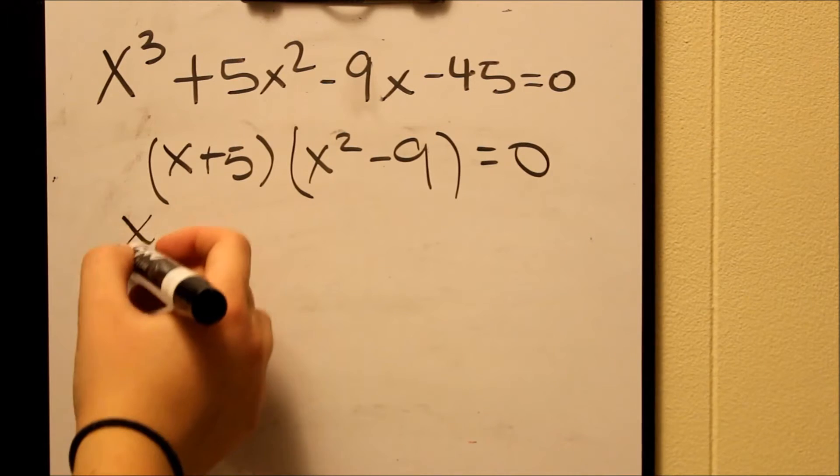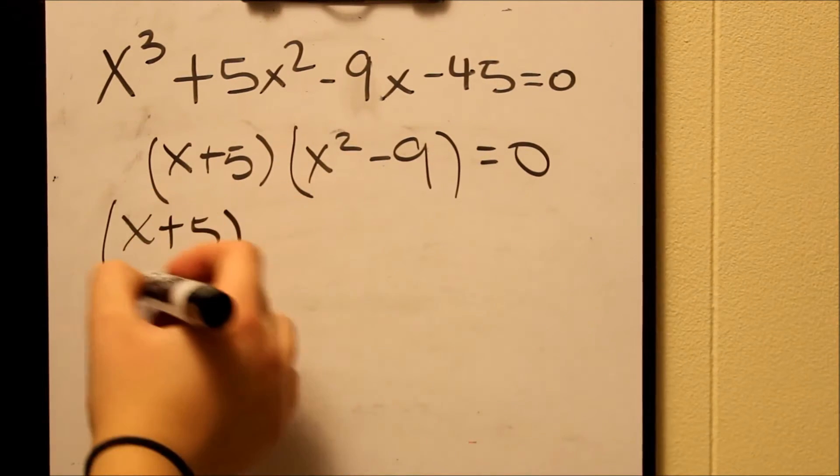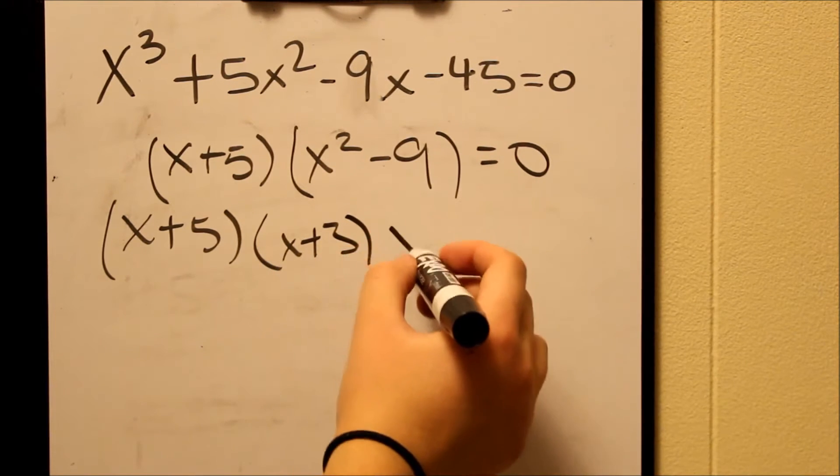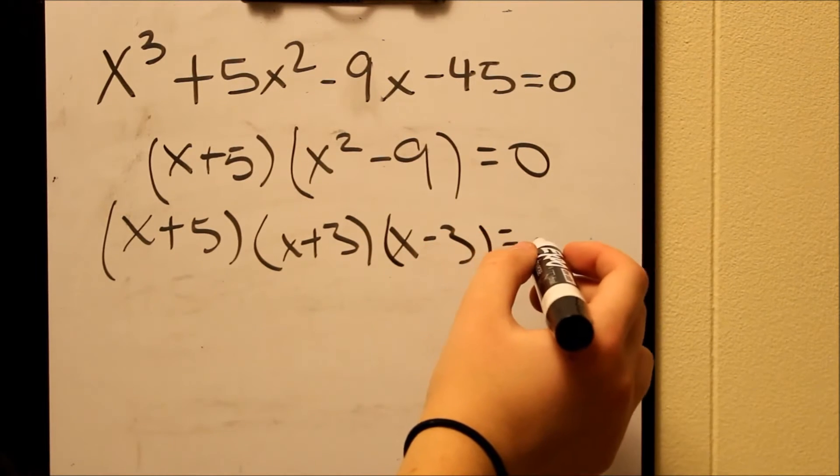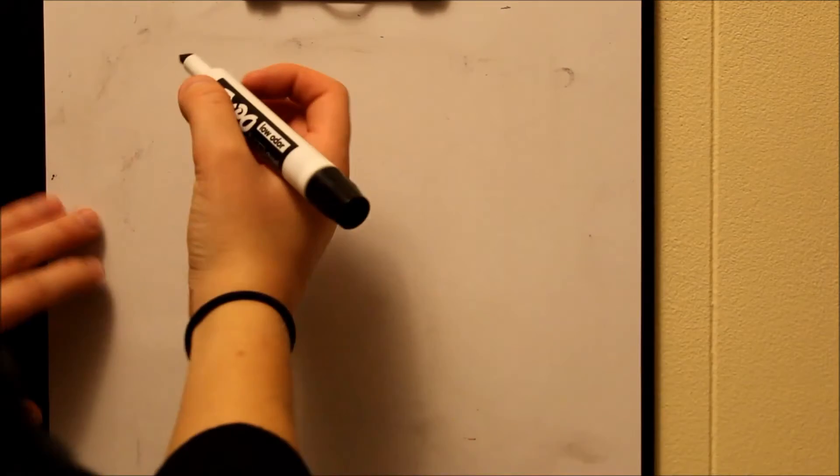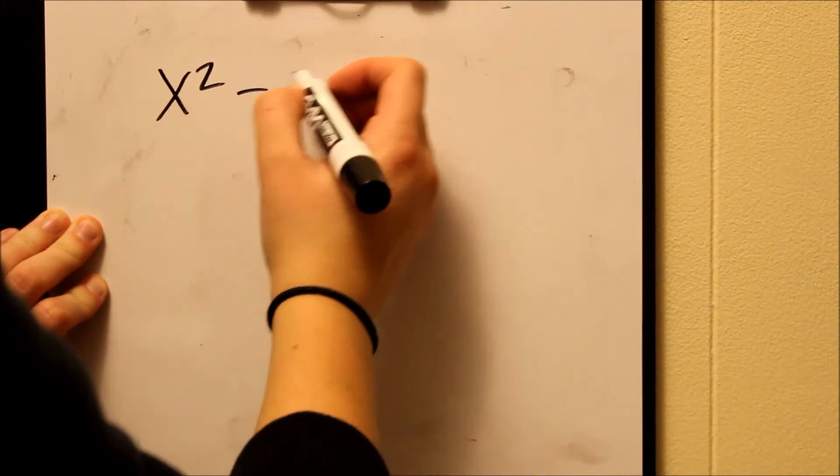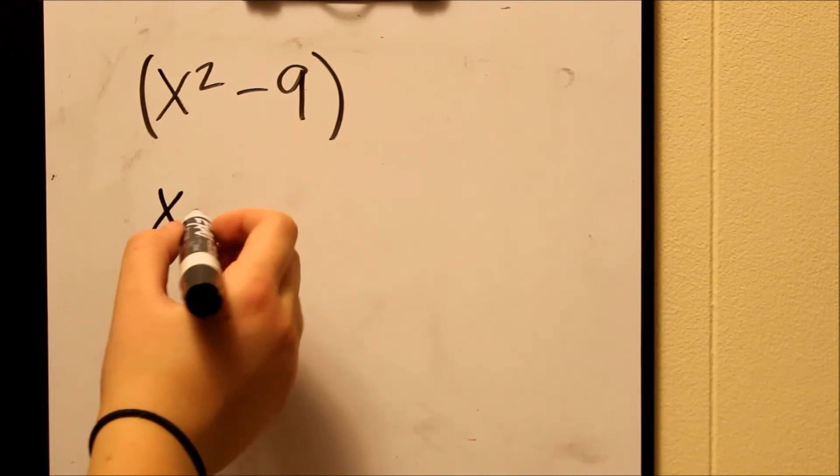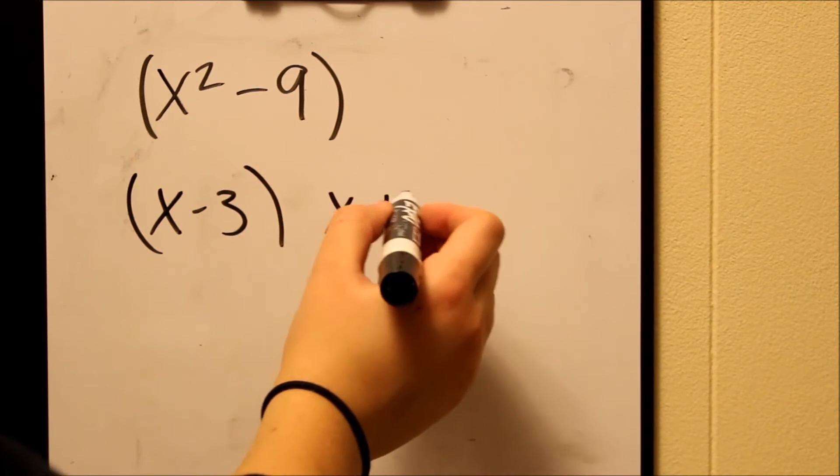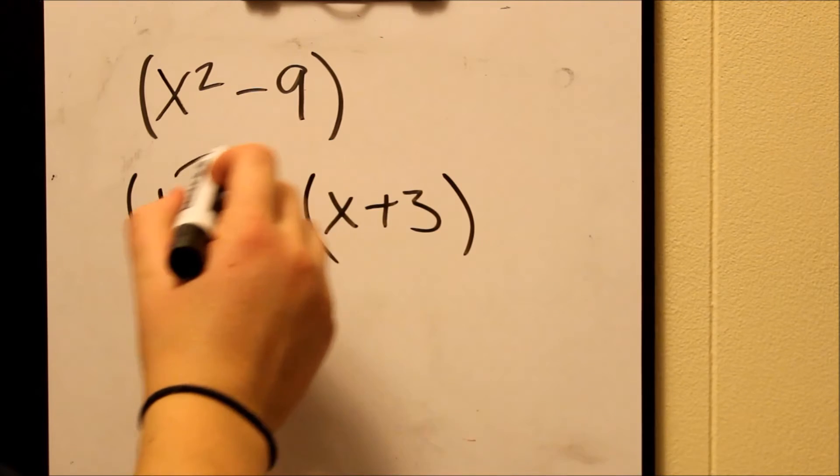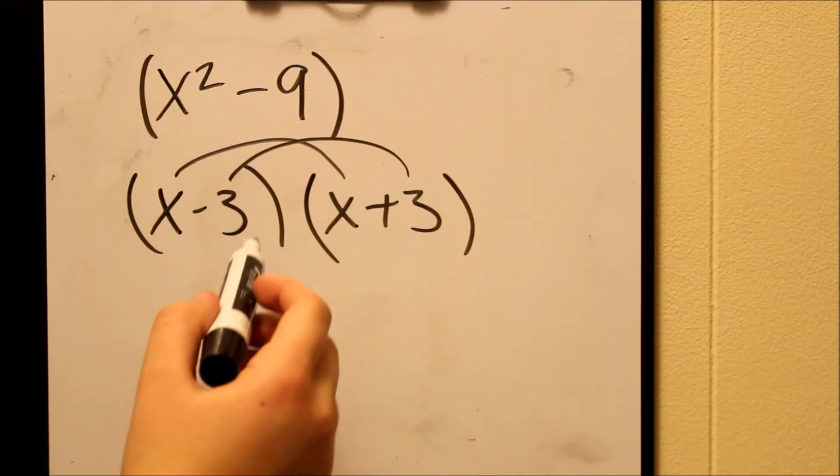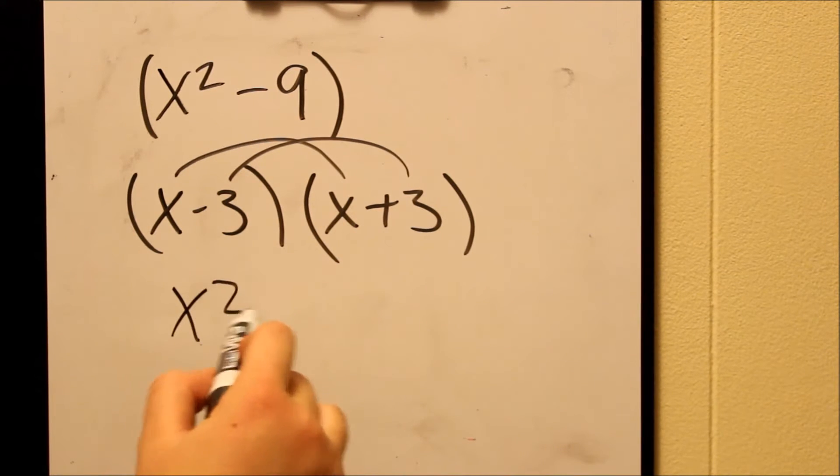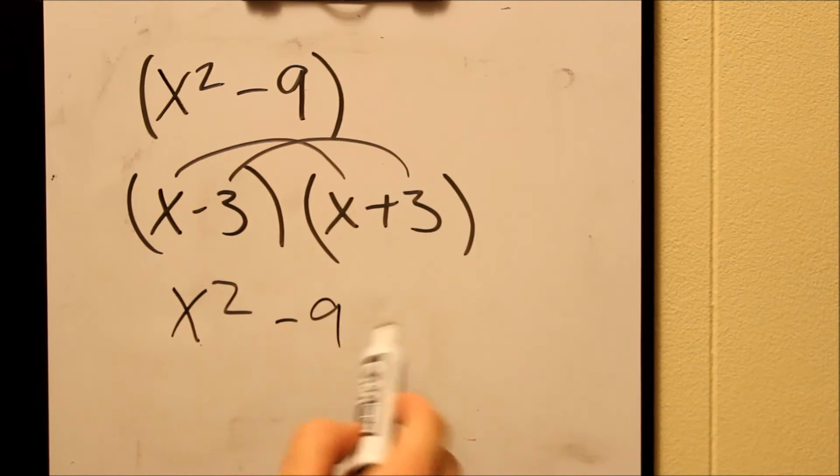Now going back to the original equation, we can factor this out even more because x squared and 9 are both able to be square rooted. So we have x plus 5, x plus 3, and x minus 3 equals 0. And again, let's check this and make sure we're right. So x squared minus 9. And then we can do what we had done before in the first checking way. So x minus 3 and x plus 3. And then we're just going to draw the lines. So x to x, negative 3 to 3. And I didn't show the other lines because they cancel each other out. But you can draw the other two lines too. But x times x equals x squared. Negative 3 times 3 equals negative 9. So you get x squared minus 9.